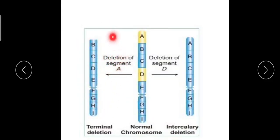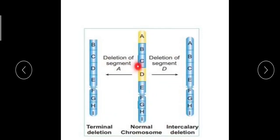In this figure you can see the 'd' segment is missing. Since 'd' comes in between the other segments, it is an intercalary segment. To remove this intercalary segment, we have to cut the chromosome in two places — one on each side of 'd'. So two breaks are involved in intercalary deletion, forming the resulting chromosome without the 'd' segment.